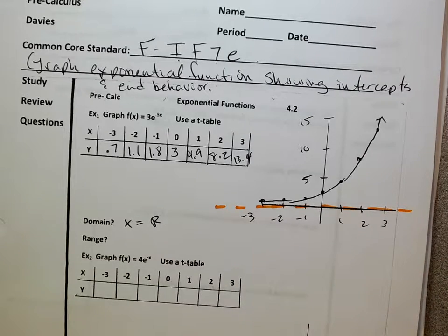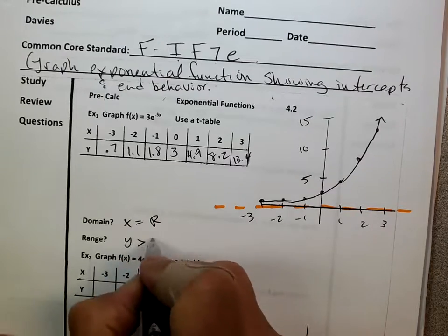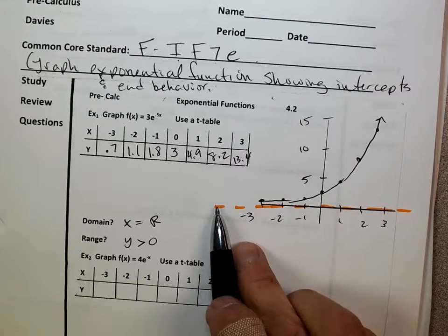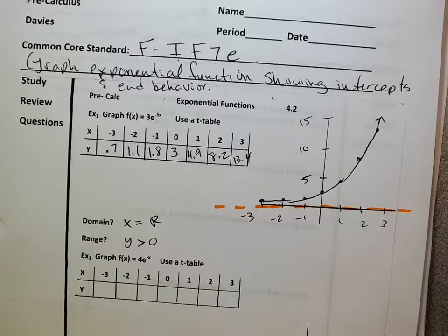But what we just saw earlier is that it will never reach a height of zero, right? So if it never reaches a height of zero, its range has got to be from zero, not including zero, but up. So my range is going to be y is greater than zero. It will never reach zero, unless you can get to infinity, which is impossible.